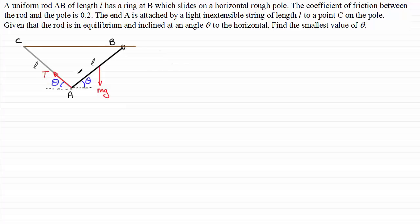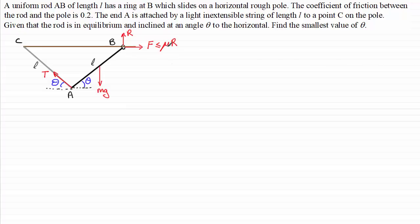At the ring, the ring is going to want to slide towards C, so friction F acts in the opposite direction. We know F must be less than or equal to the coefficient of friction mu times the normal contact force R, which acts upward. Since mu is 0.2, that's one fifth, so F must be less than or equal to R over 5.